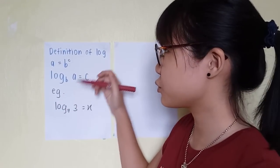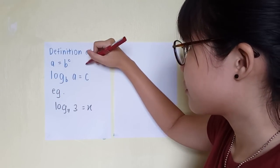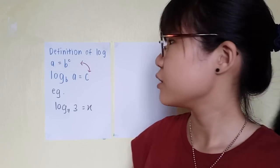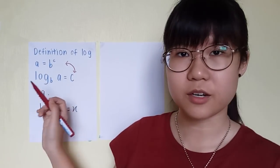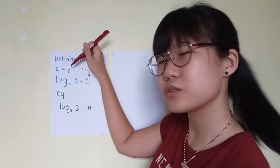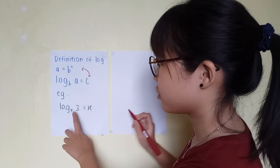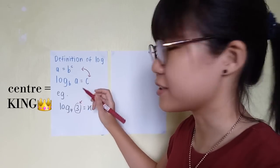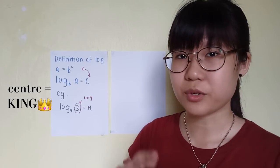These two are the definitions of logarithm, but you have to remember either one only. You have to know how to convert from one form to the other and vice versa. I like to convert from the logarithm form to the exponential form. When you see all the letters you'll be confused, so I'll explain using an example. There are three things here — one, two, and three. Just remember that the center one is the king. The king doesn't move, the king just remains there.